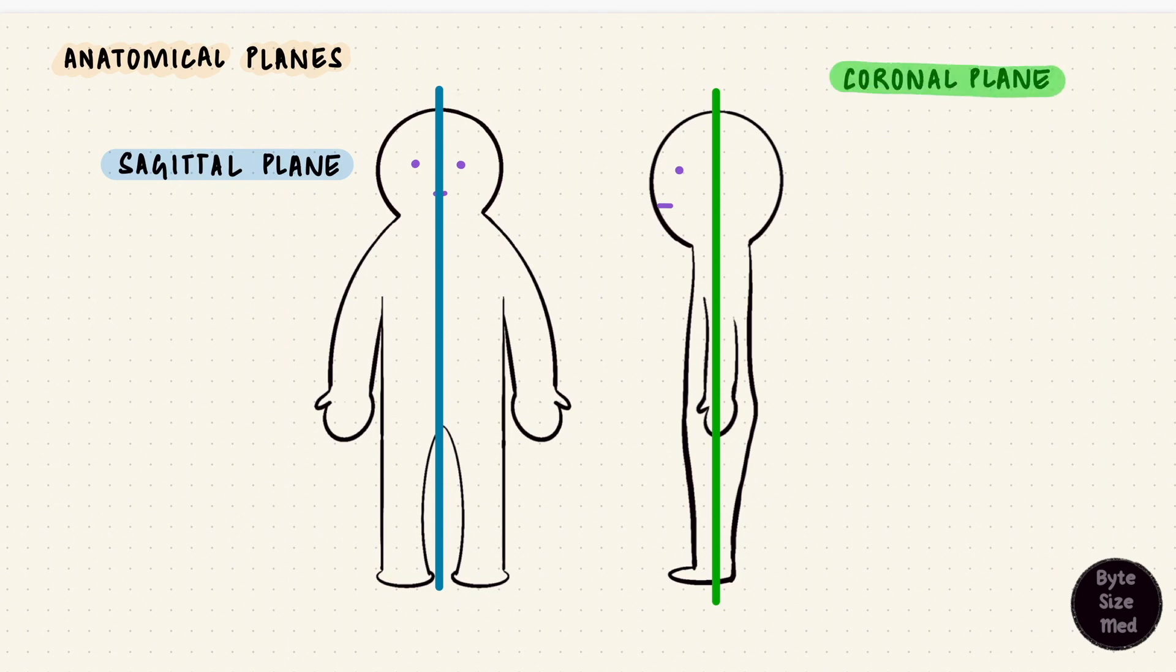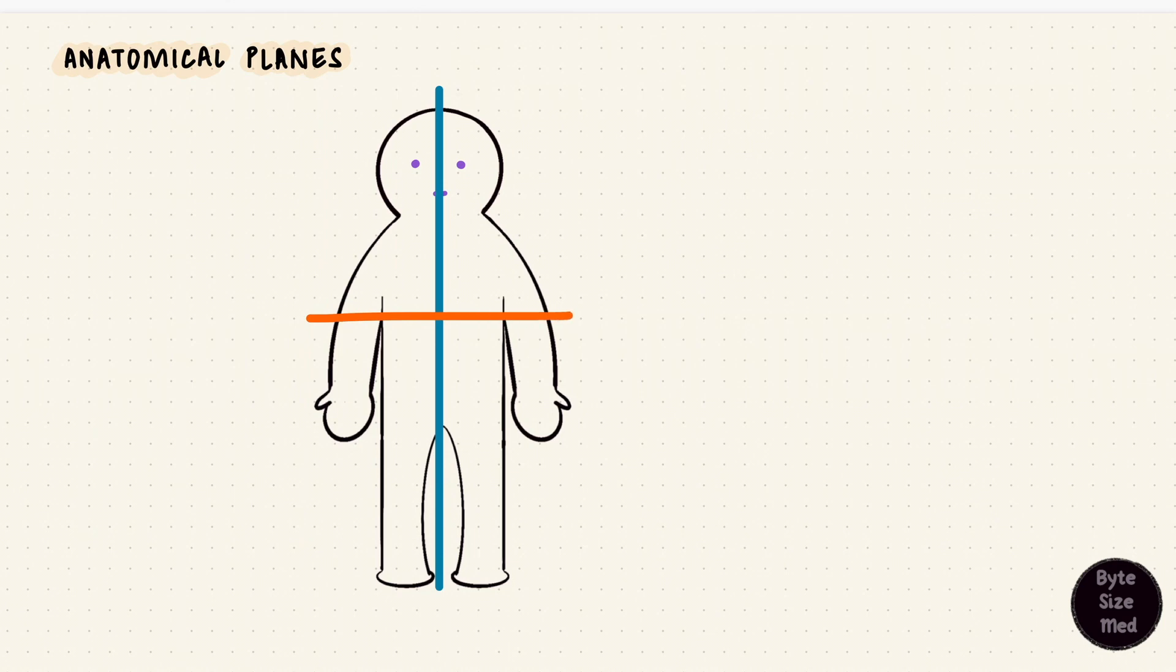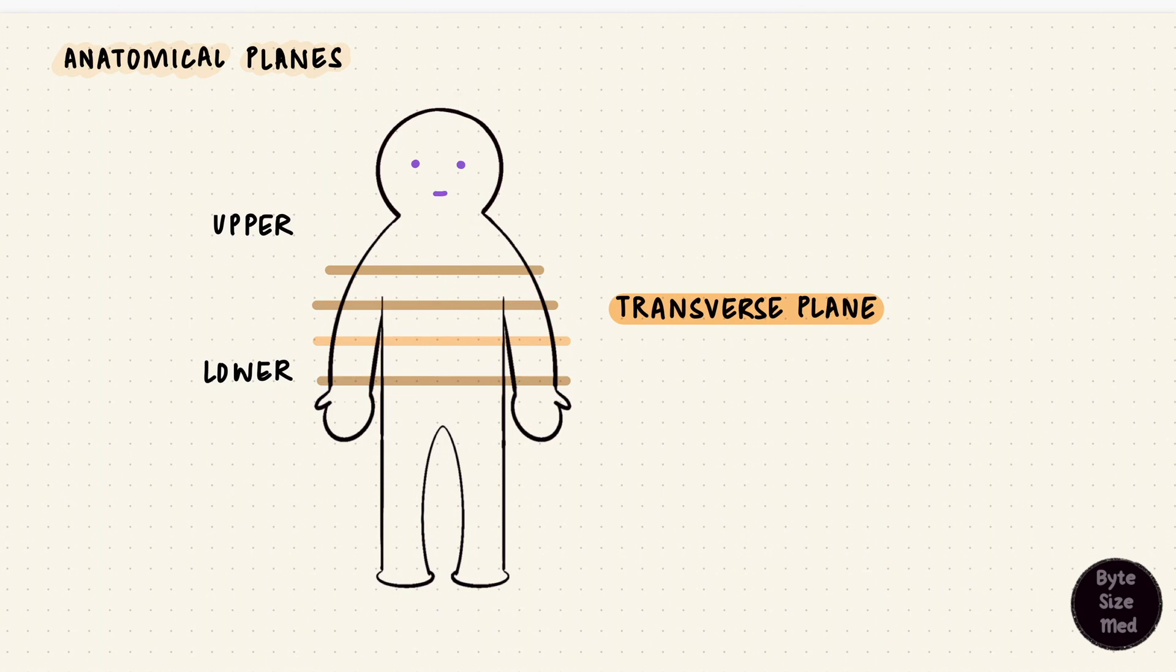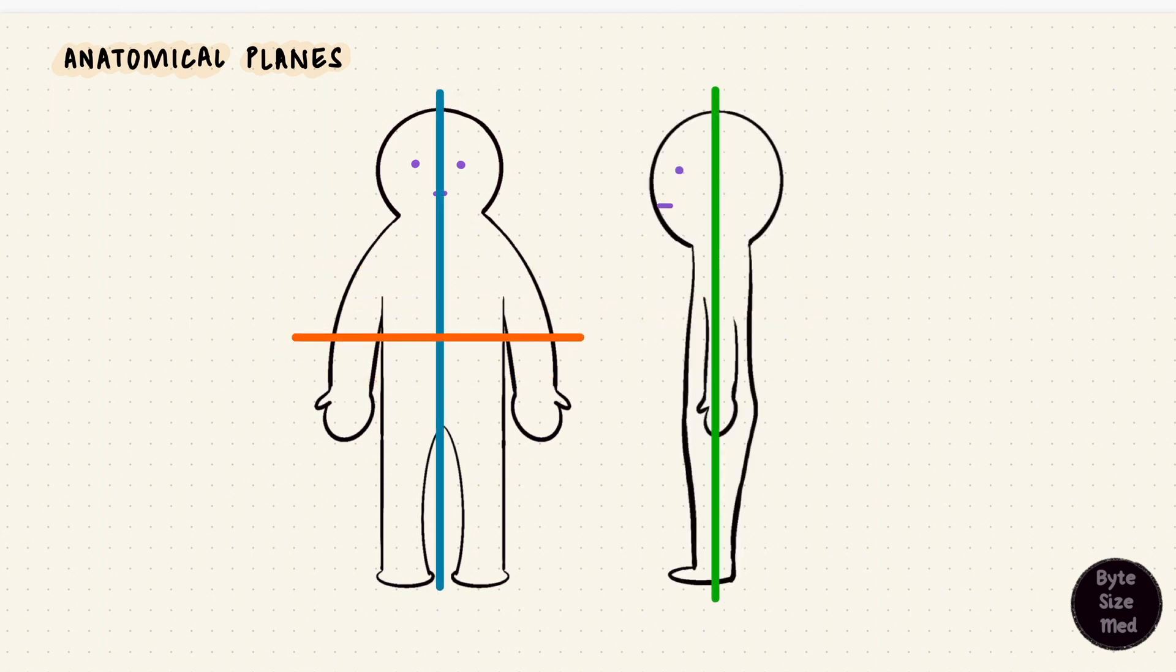Sagittal and coronal are the longitudinal planes and they're perpendicular to each other. Now we go perpendicular to the longitudinal plane. That's the transverse plane or the horizontal plane. This splits the body into an upper part and a lower part. It doesn't have to be in halves. Anywhere in this direction is a transverse plane. Sagittal, coronal and transverse planes, those are the three anatomical planes.